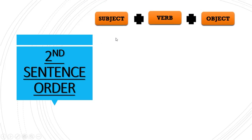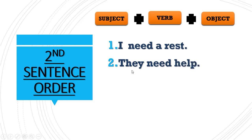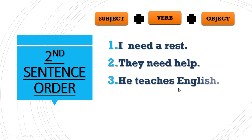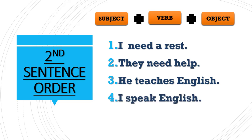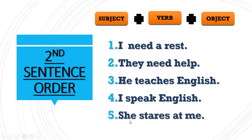The second sentence order is subject plus verb plus object. Examples: 'I need a rest' — 'I' is subject, 'need' is verb, 'a rest' is object. 'They need help' — 'need' is verb, 'help' is object. 'He teaches English' — 'teaches' is verb, 'English' is object. 'I speak English.' 'She stares at me' — 'she' is subject, 'stares' is verb, 'me' is object.